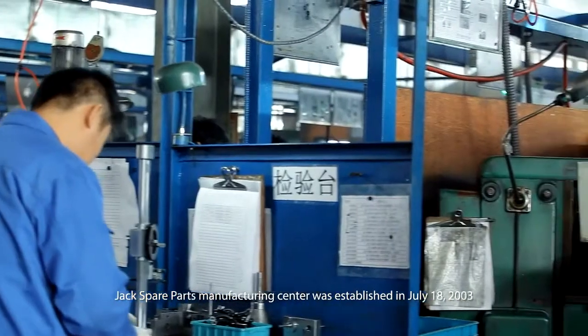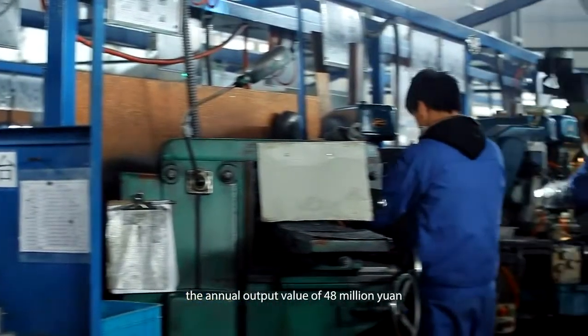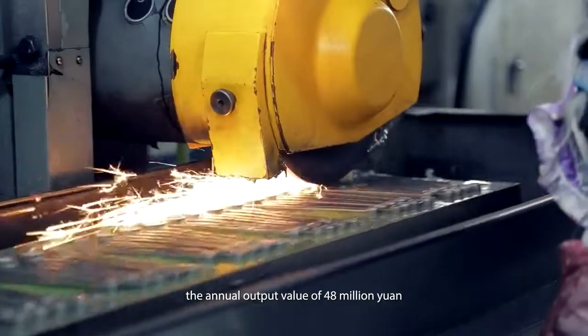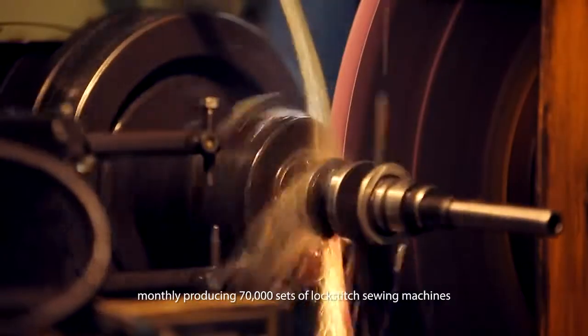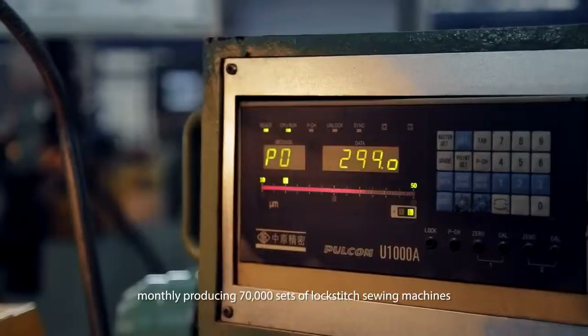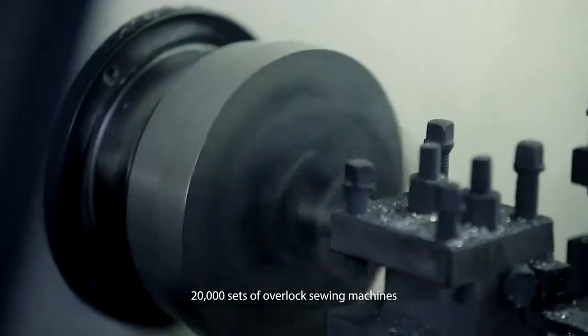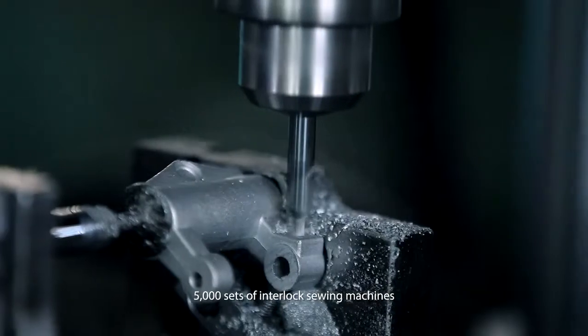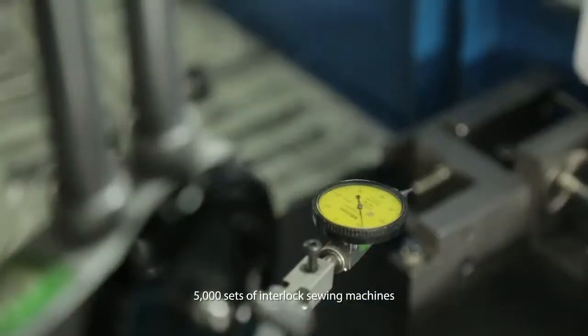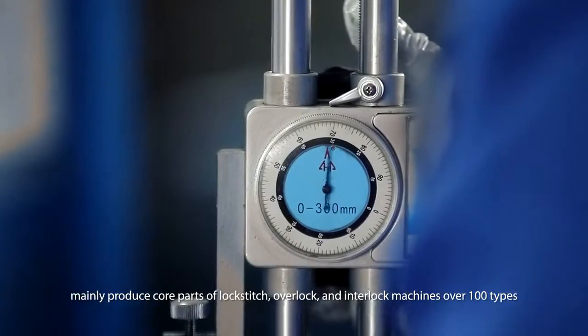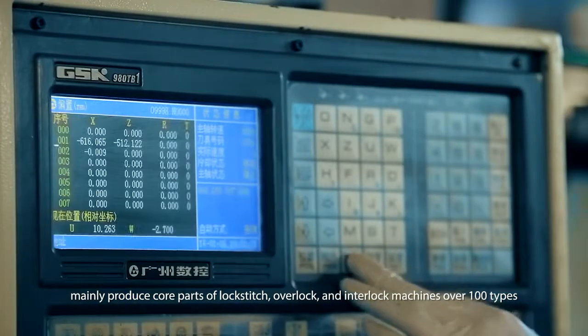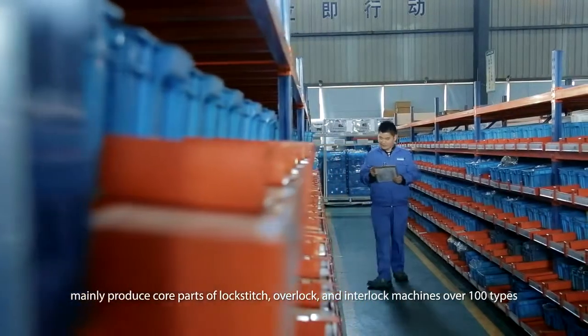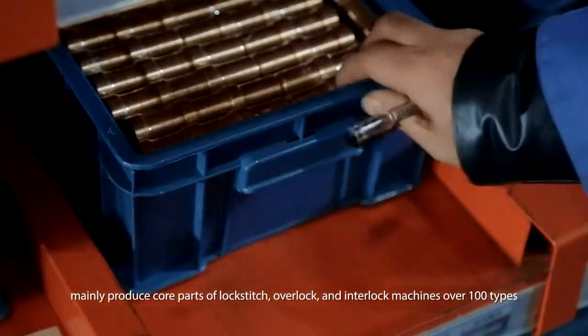Jack Spare Parts Manufacturing Center, the annual output value of 48 million yuan. Monthly producing 70,000 sets of lockstitch Sui machines, 20,000 sets of overlock Sui machines, 5,000 sets of interlock Sui machines. Producing core parts of lockstitch, overlock and interlock machines, over 100 types.